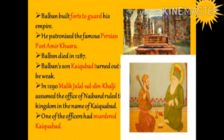Balban died in 1287. His son Kaikubad turned out to be weak. In 1290, Malik Jalaluddin Khalji, the commander of the army, assumed office and ruled the kingdom in the name of Kaikubad. Then Jalaluddin had Kaikubad murdered and formally ascended the throne, beginning the rule of the Khalji dynasty.